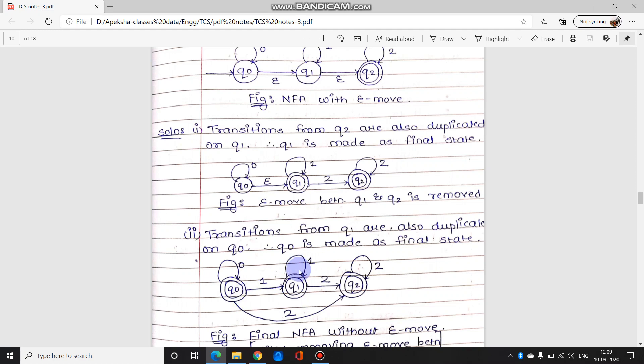Q1 se jitne bhi transitions ho raha hai wo saare humme Q0 pe copy karna hai. So agar Q1 se Q1 ja raha hai, Q1 se Q2 ja raha hai, so you have to make sure ke that Q0 se Q1 and Q0 se Q2 bhi jana chahiye. Plus Q1 is a final state, so therefore Q0 will also be a final state. So this is how three states ka transition from an epsilon move you have made it a non-epsilon NFA.